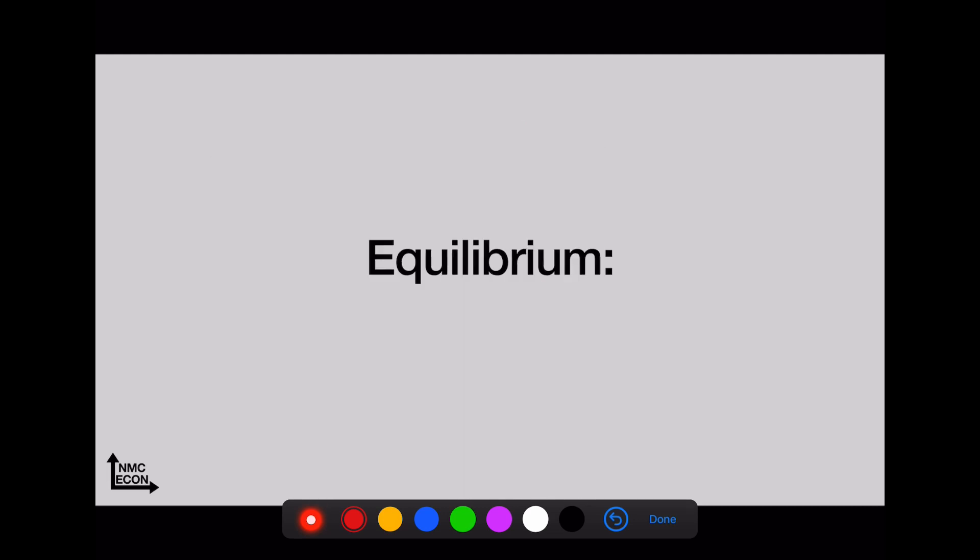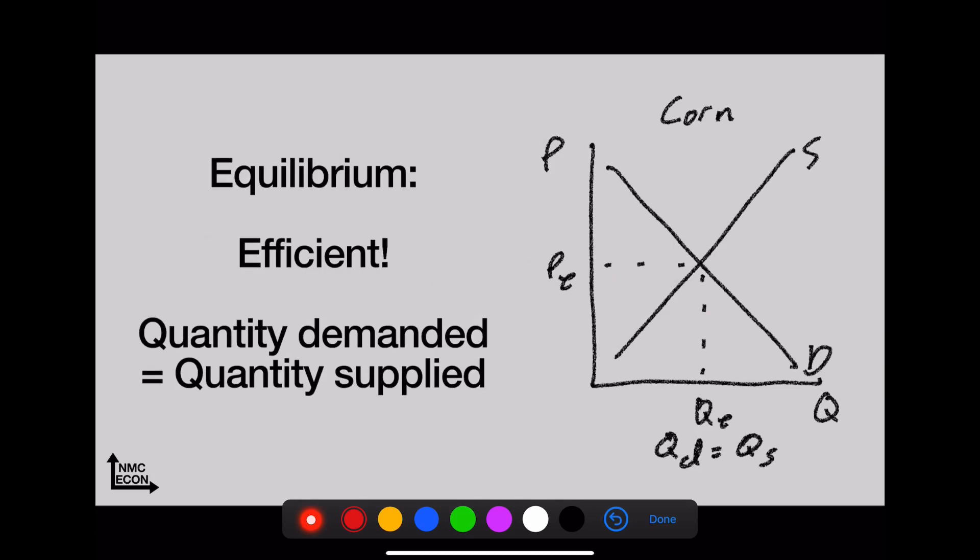Equilibrium—equilibrium is efficient, it's awesome. This happens when quantity demanded equals quantity supplied. Upward sloping supply, downward sloping demand, and where they meet we have Pe—price at equilibrium—and Qe—quantity at equilibrium. Again, Qd equals Qs. Nice.